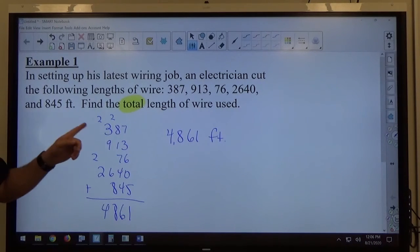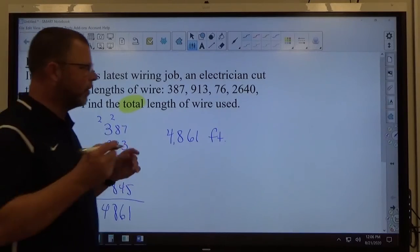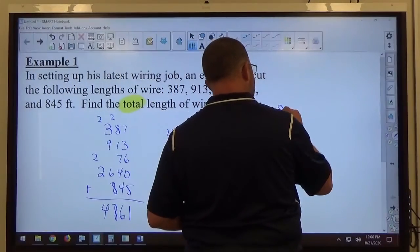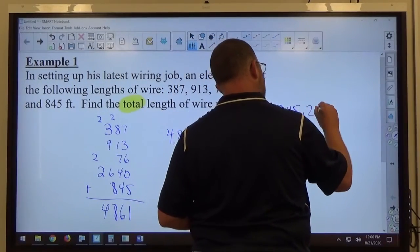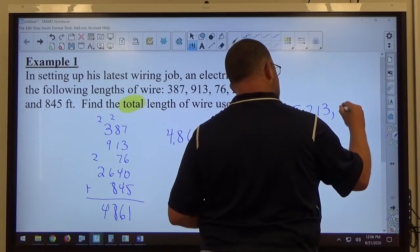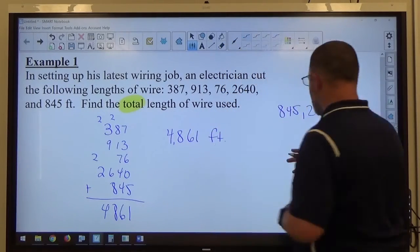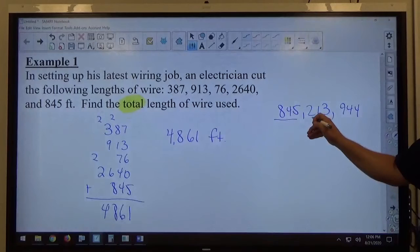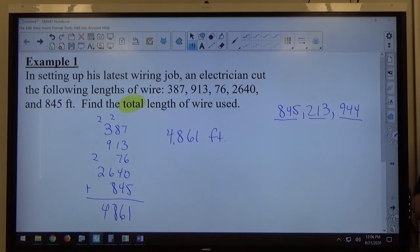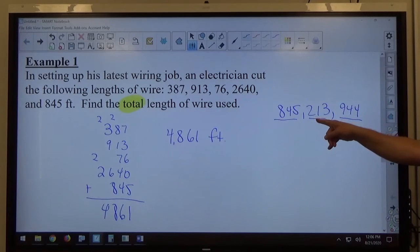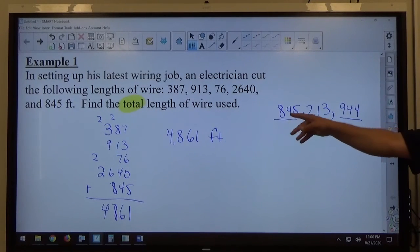It's like 861, and then let's say I have some ginormous number. This is the millions group, this is the thousands group, this is the hundreds group, or this is the units group. 944, right? This is 213,000, this is 845 million.